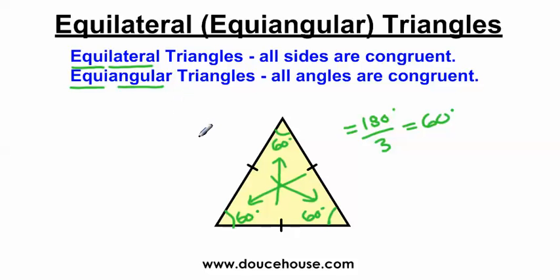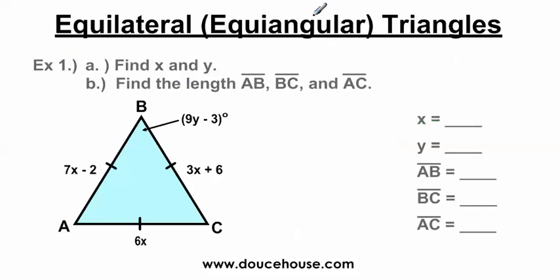I'm going to work two problems now dealing with the concept that all the sides are equal and all the angles inside an equilateral triangle are 60 degrees. My students came across this problem recently, so I decided to make a video on it. We need to find X and Y, and we need to find the lengths of AB, BC, and AC. I have an equilateral triangle because all the tick marks indicate all the sides are equal. My goal is to find X first, then find Y.